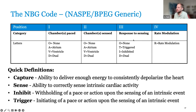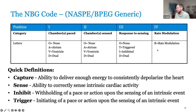The third position is the device's response to sensing: O means no response, T means it triggers pacing, I means it inhibits pacing, and D means it does both. The fourth position is rate modulation — added later — which is the ability for the device to respond to a sensor-driven rate. For patients with chronotropic incompetence, it allows the device to pace physiologically appropriate to the patient's need; if the heart doesn't modulate its rate itself, the device can do it.